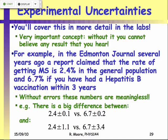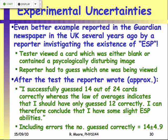If you put in the uncertainties and they overlap significantly, that would mean you just had a statistical fluctuation and got slightly more people with hepatitis B vaccinations getting MS. So it's very important that you include statistical uncertainties when writing a scientific paper or wanting your results taken seriously. This was also the example of the Guardian reporter correctly guessing 14 out of 24 cards and immediately believing they had ESP — really just a symptom of not understanding statistics.